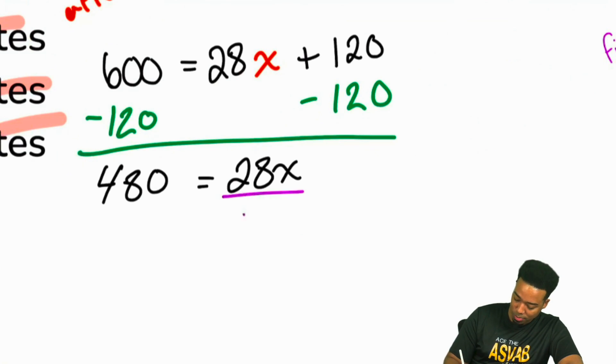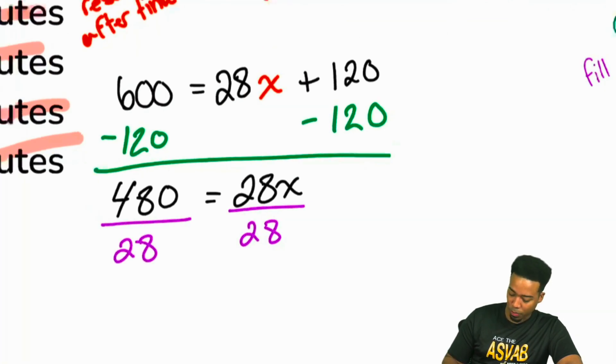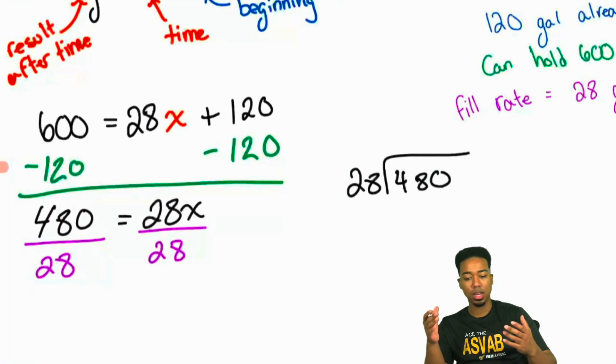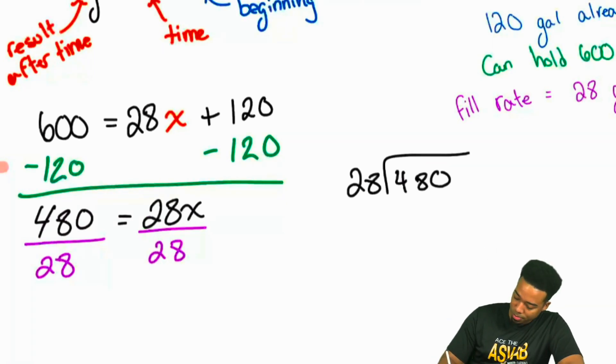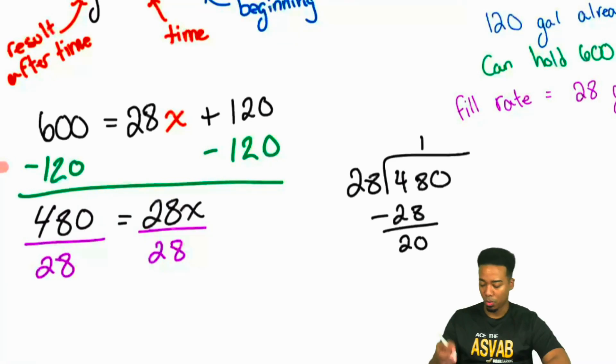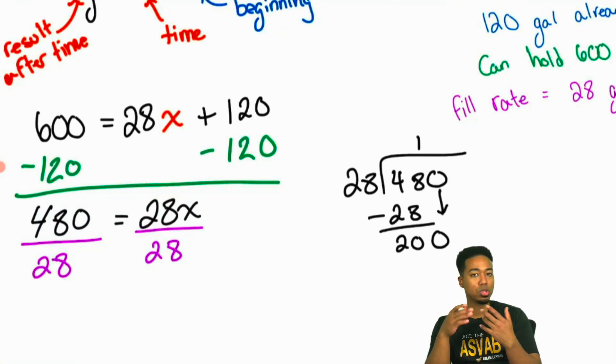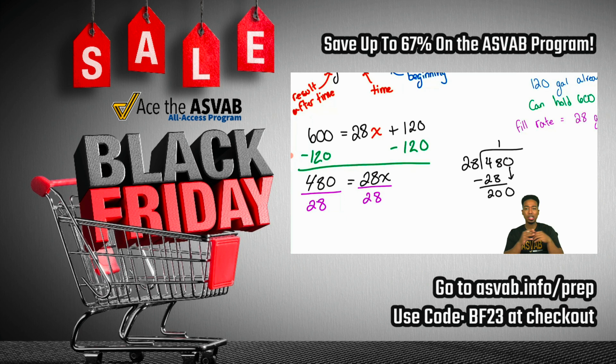And once we do that, we're going to perform that: 28 going into 480. Everyone, 28 goes into 48 how many times? Yep, it's going to be 1. So we'll go ahead and have that there. Subtract 28, giving us 20 left. Alright. So we'll go ahead and drop that 0 down. If you had to take a guess everybody, how many times would you say 28 could go into 200? Because if it's 10, that'll be 280 - that's way too much. So it may not even be 9, may not even be 8. You guys are saying 7.